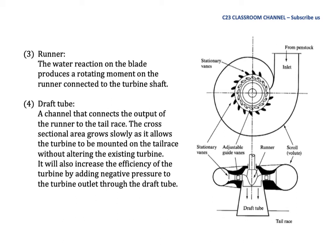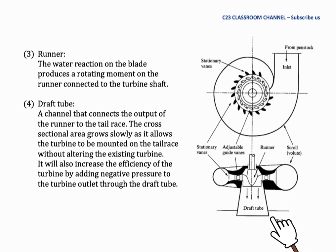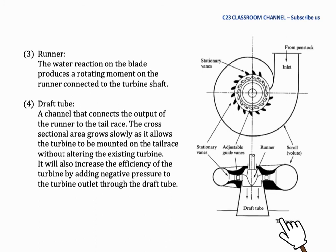Number four: Draft Tube. A channel that connects the output of the runner to the tailrace. The cross-sectional area grows slowly as it allows the turbine to be mounted on the tailrace without altering the existing turbine. It will also increase the efficiency of the turbine by adding negative pressure to the turbine outlet through the draft tube. It is normally designed bigger at the end to make sure that water will flow out easily.